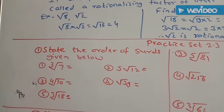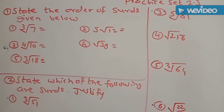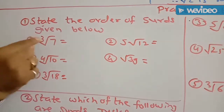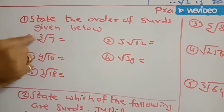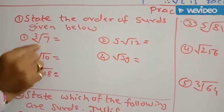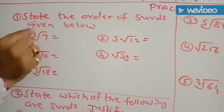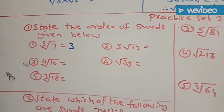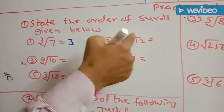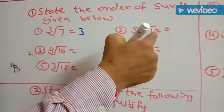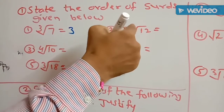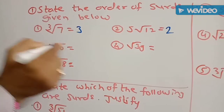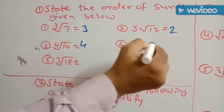We now take the examples of Practice Set 2.3. First example: state the order of the given SIRDs. In nth root of a equals x, n is the order — it is the number written inside the radical symbol. Here, cube root of 7 means 3 is the order. For 5 times square root of 12, the 5 is outside and not inside the radical symbol, so the order is 2 (default when no number is given). Fourth root of 10 means order is 4. Root of 39 has no number given, so order is 2. Cube root of 18 has 3 given, so order is 3.